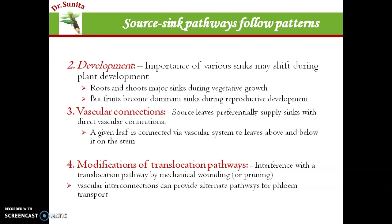Third is vascular connection — preferable source to sink supply is according to their direct vascular connection. जो leaf जिस sink के direct vascular connection में होगी, वो preferably उसको organic solutes faster provide करवाएगी. Modification of the translocation pathways — कुछ interference आ जाती है normal pathway में, जैसे callose की formation हो जाती है phloem में — तो उस case में alternate pathway develop हो जाते हैं through vascular interconnections, और उनके through transport होता है.